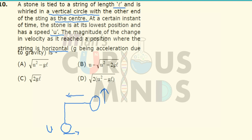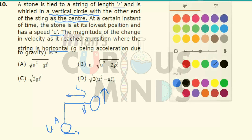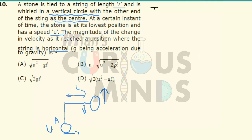Let the length be L. By the law of conservation of energy, let this point be A and this point be B. The total energy at point A will be equal to the total energy at point B. The total energy at point A is only kinetic energy, which is equal to half M U squared.